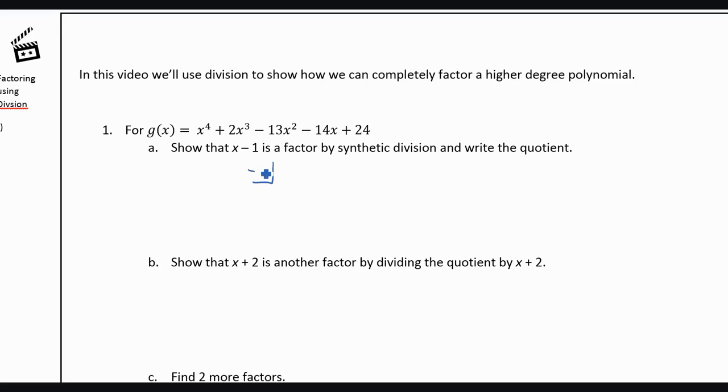So we're going to put positive 1 in the box, because that's what the zero would be. And we'll write the coefficients, so 1, 2, negative 13, negative 14, and 24.